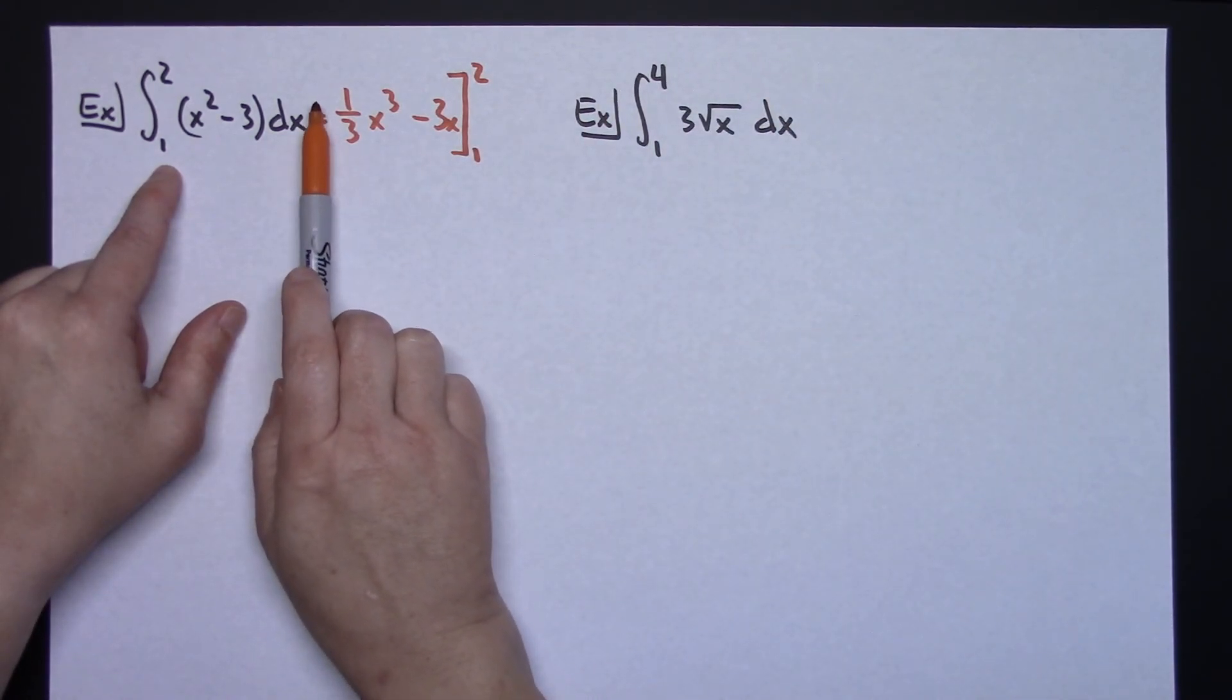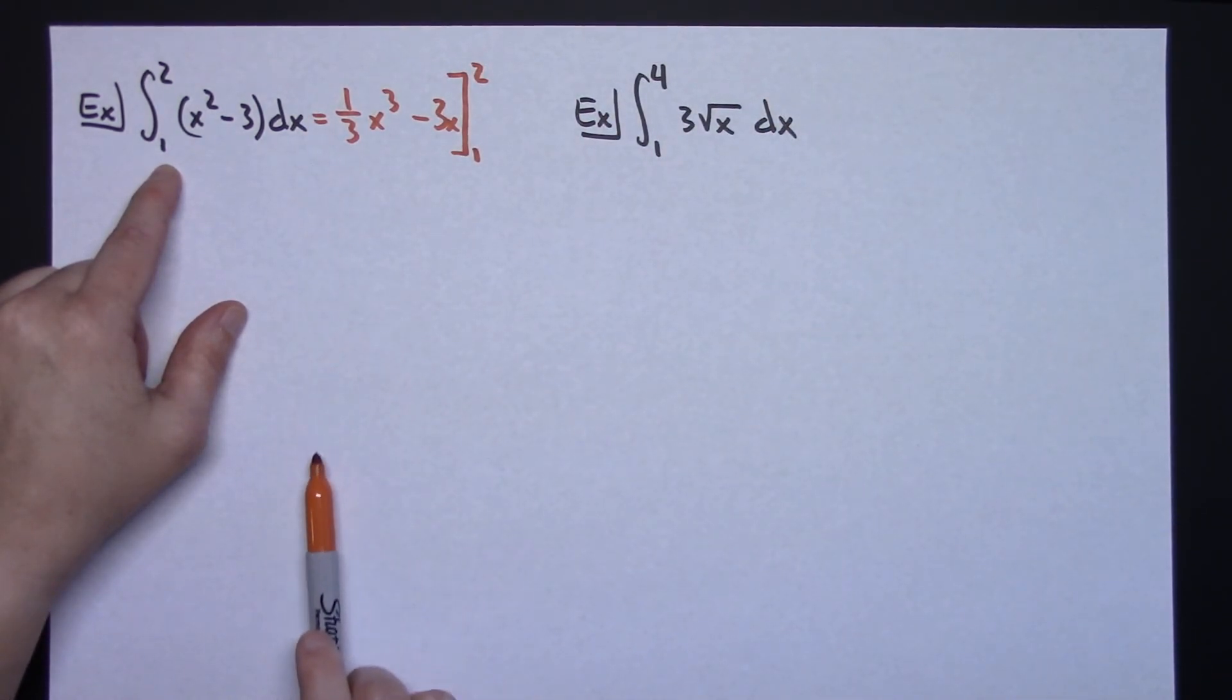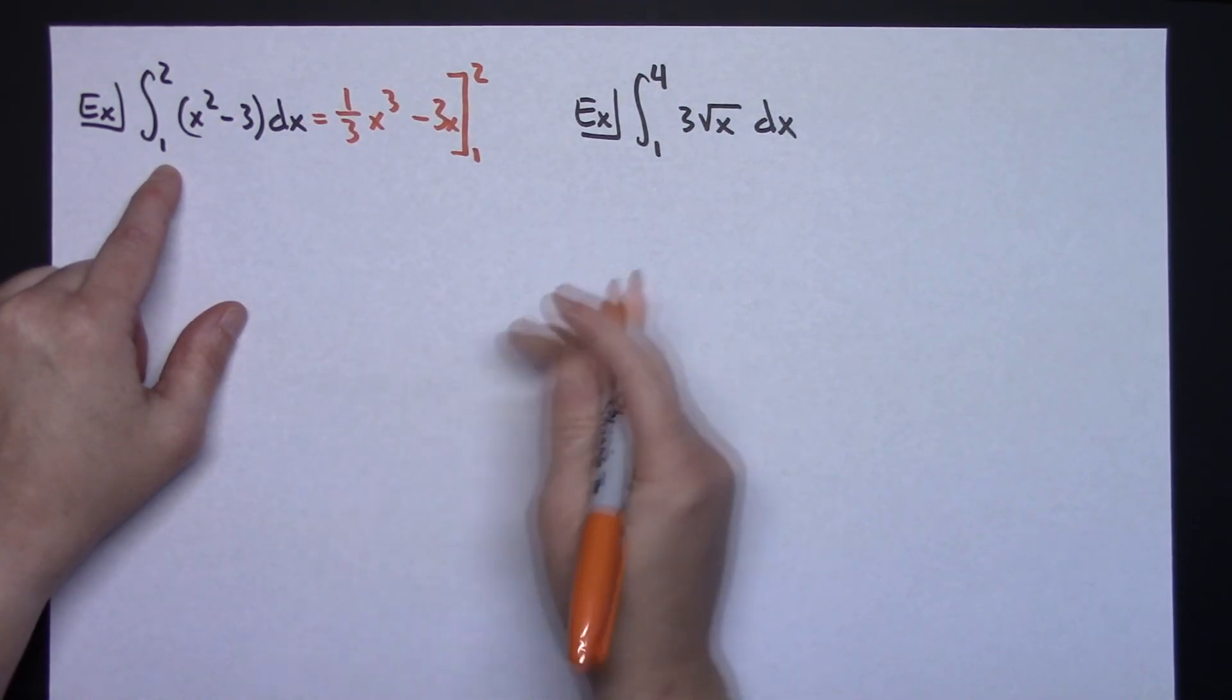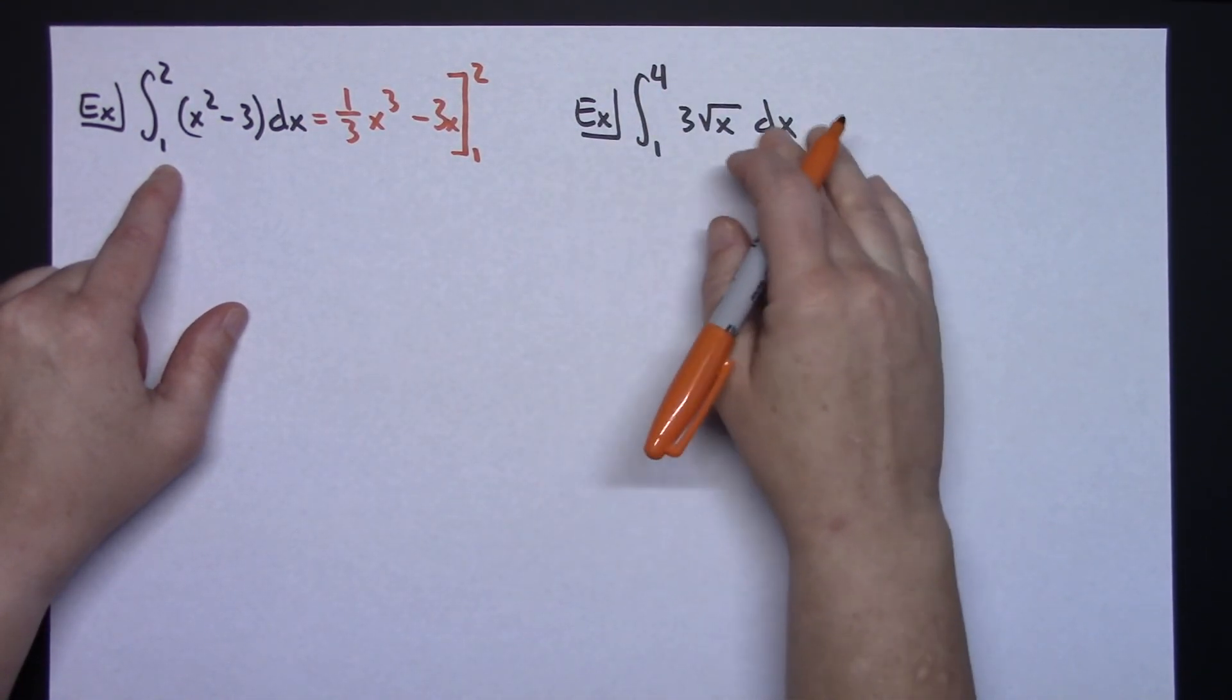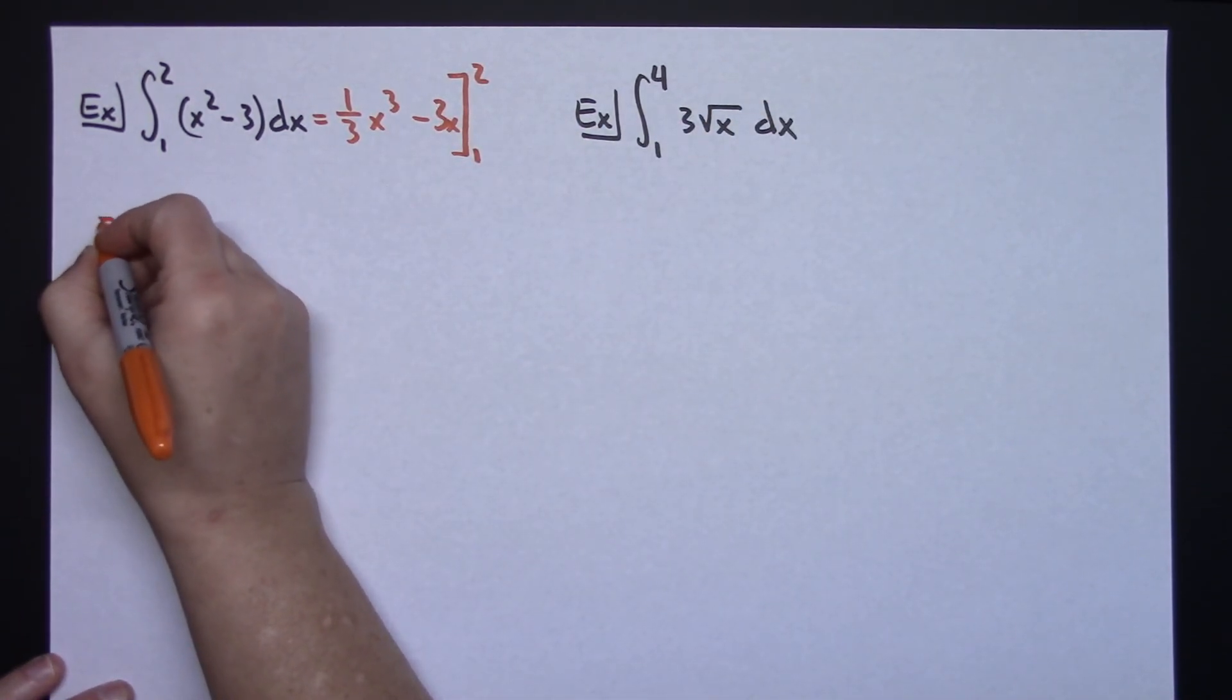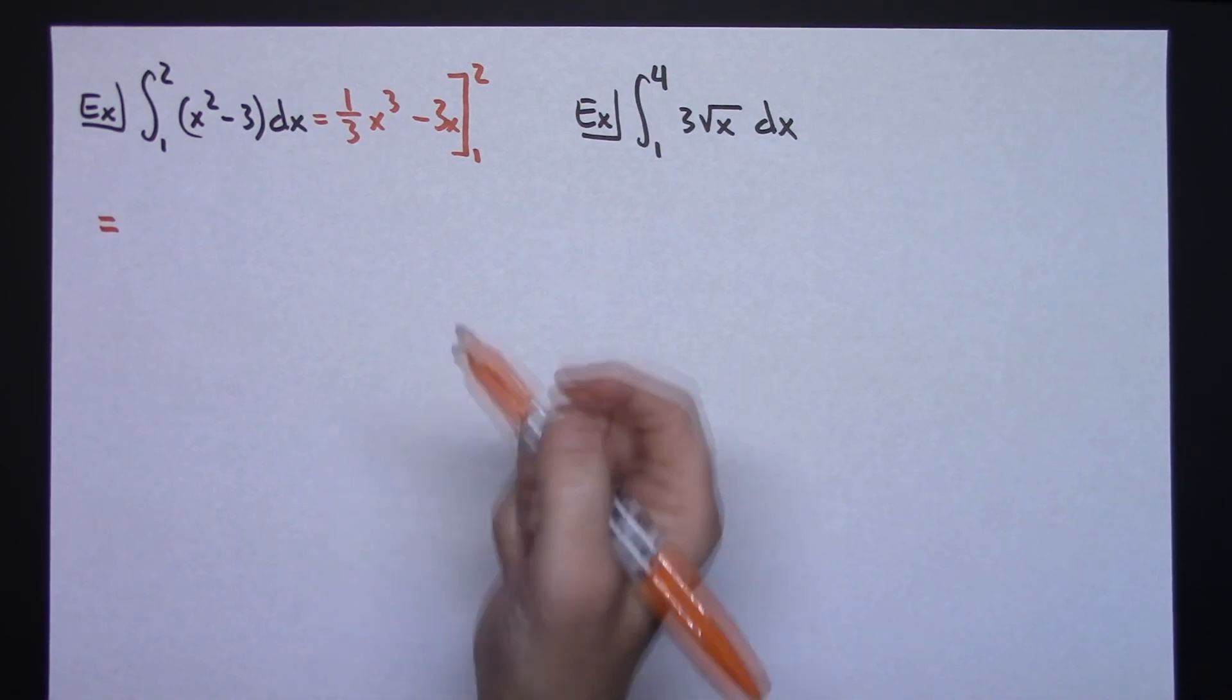Alright, now under normal circumstances, I would keep the equal sign equal underneath each other and work it all out here. Alright, but if I do that, I'm clearly going to run into the paper over here. So what I'm going to do is I'm going to bring my equal sign all the way over here, which is something I don't normally do.